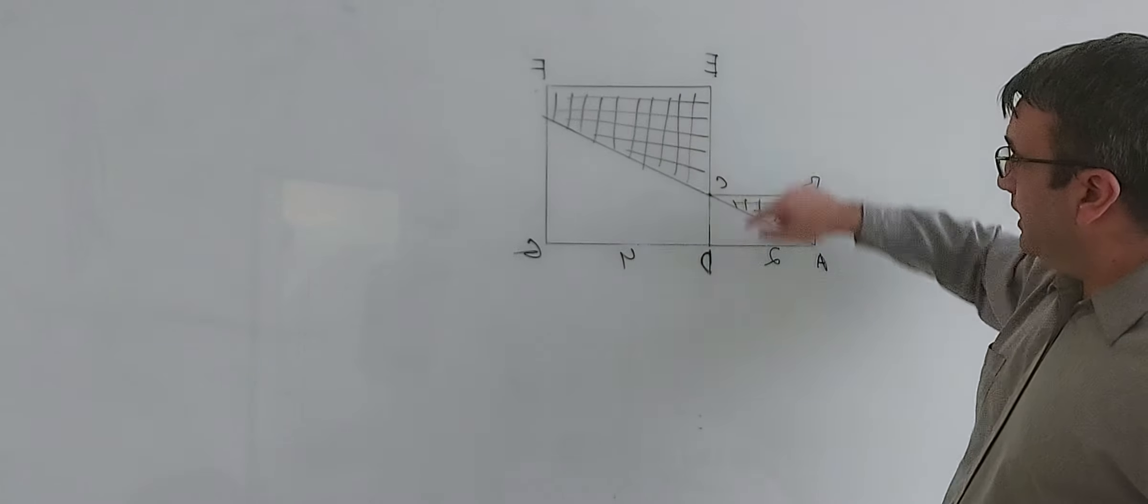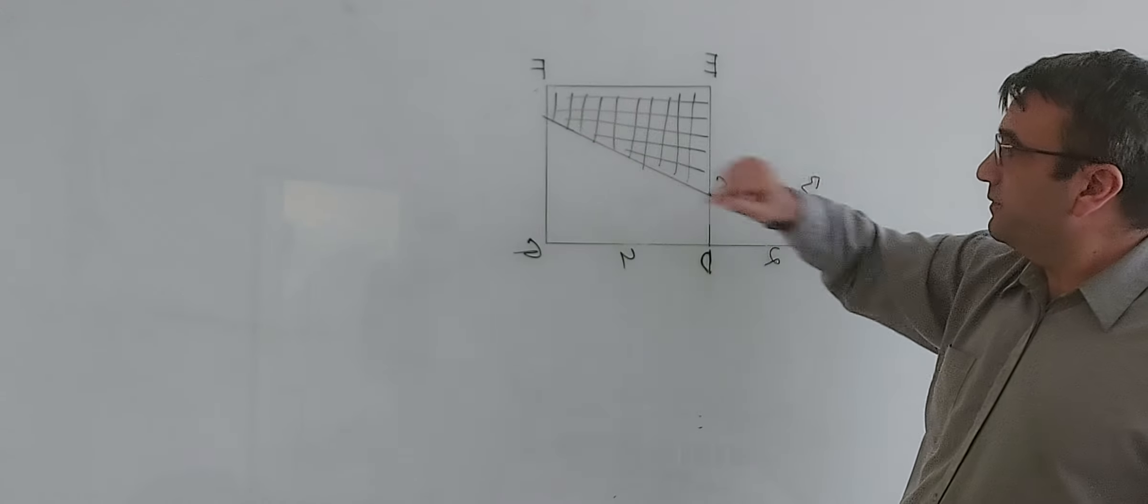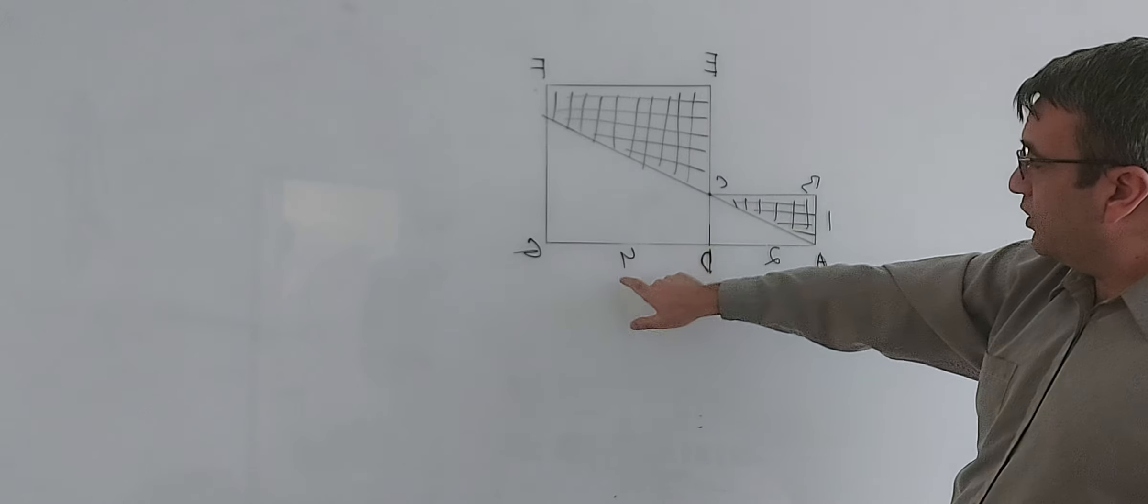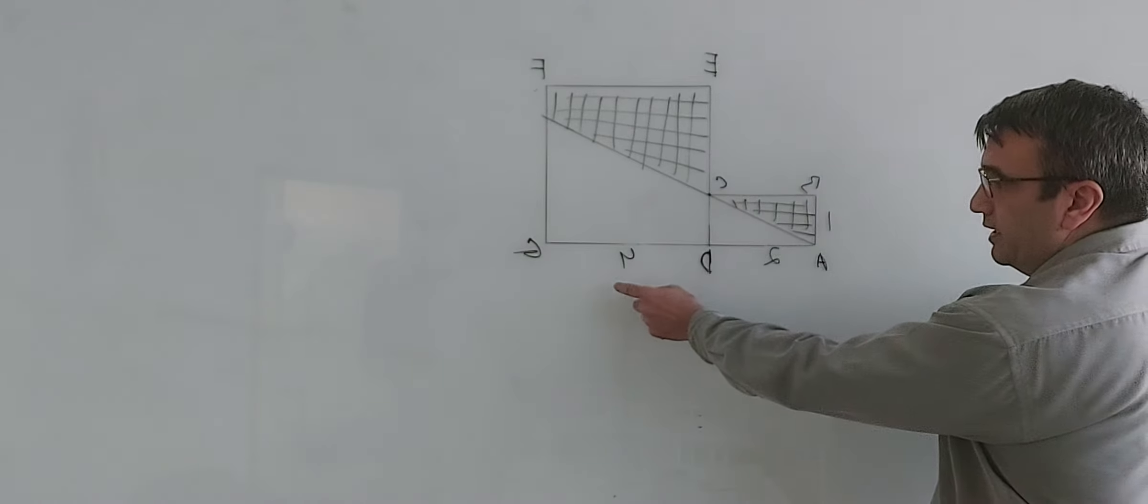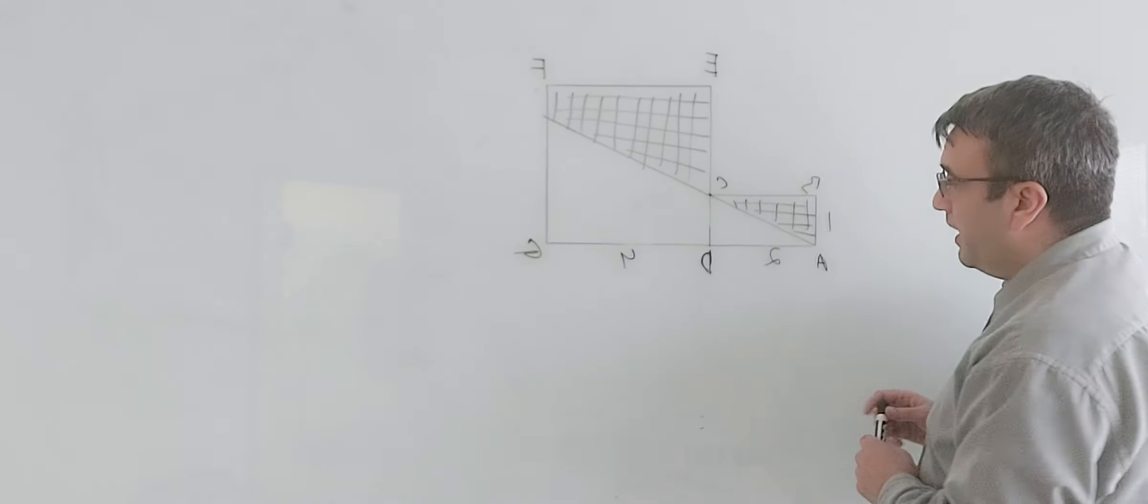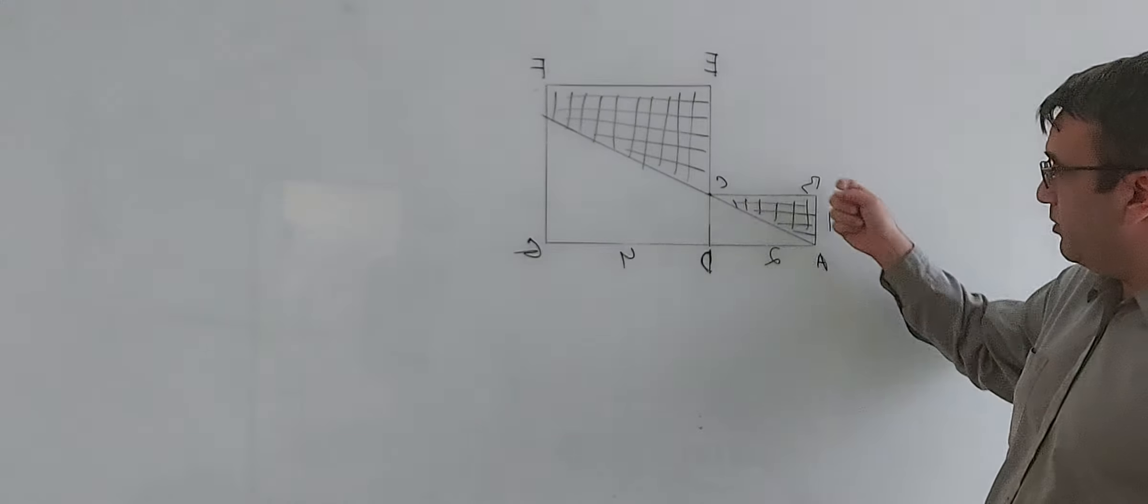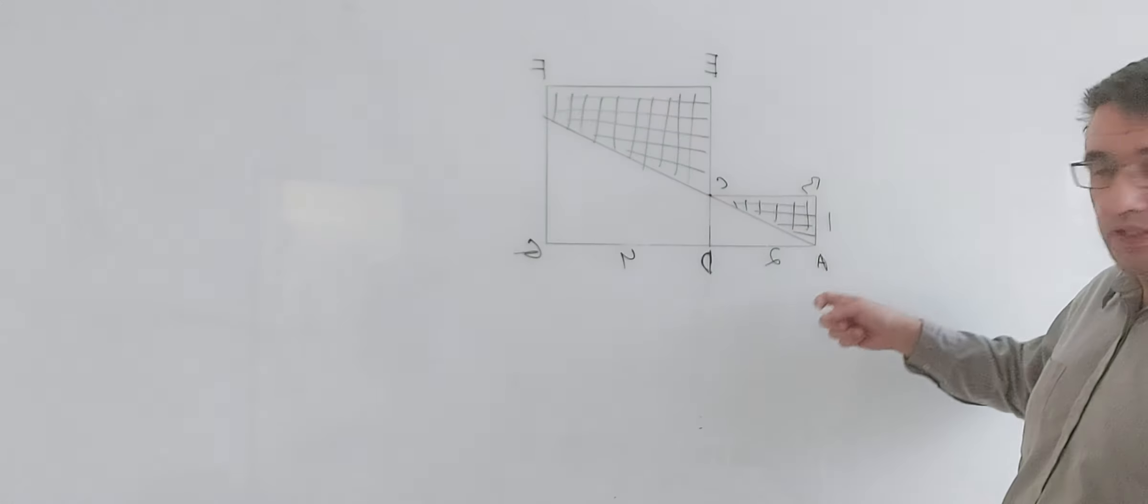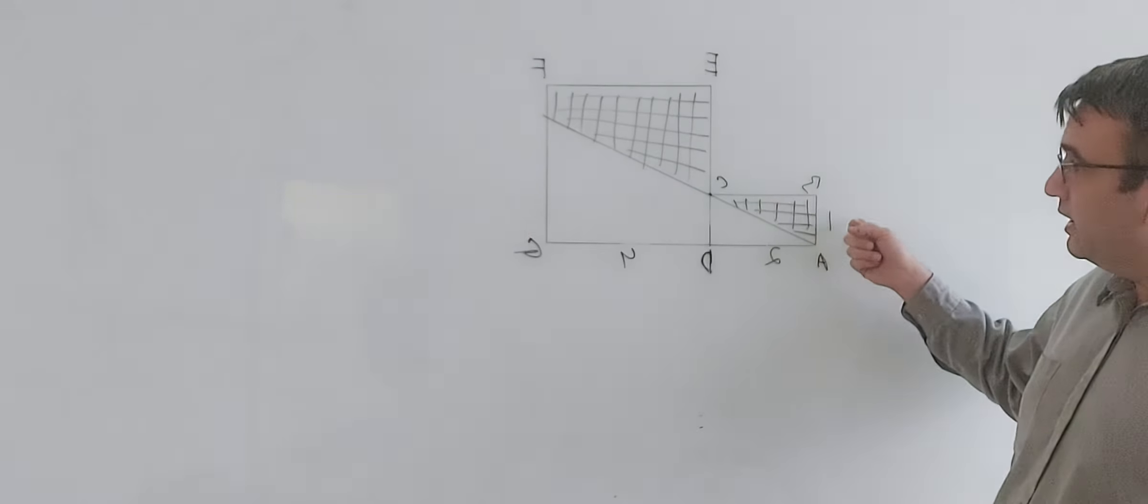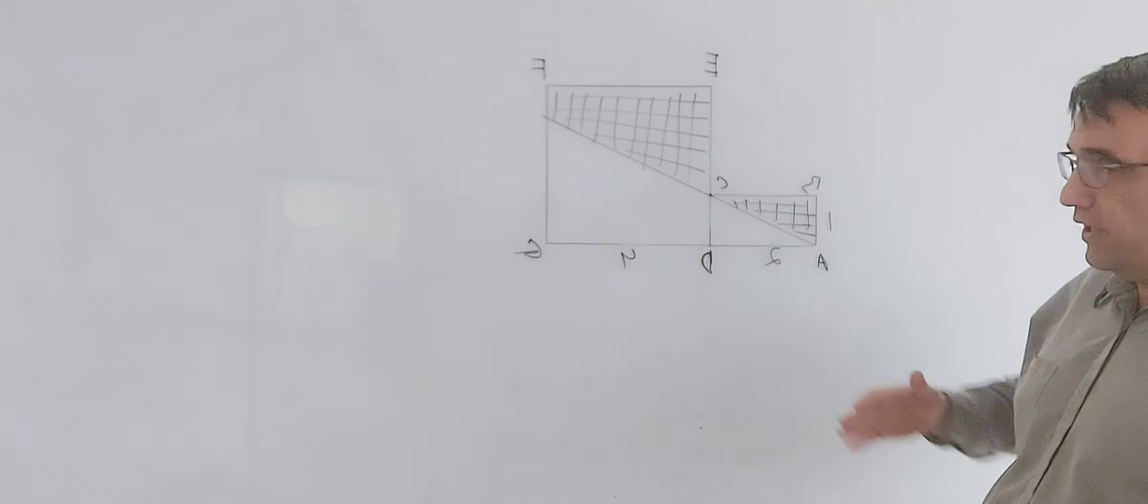So we have a square EDGF with side length 4, and we have rectangle ABCD with side lengths 2 and 1. We want to figure out the shaded area.